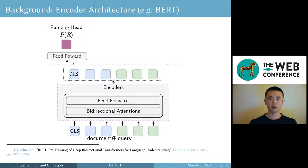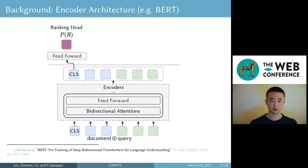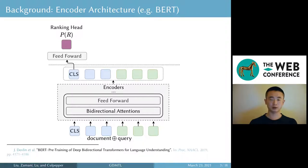We can then rank documents based on their scores. In essence, it's very similar to a binary classification problem. Our target is to incorporate generation tasks into BERT and see if that helps improve its ranking ability.